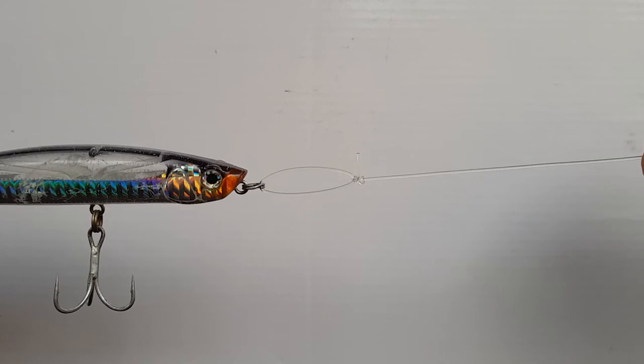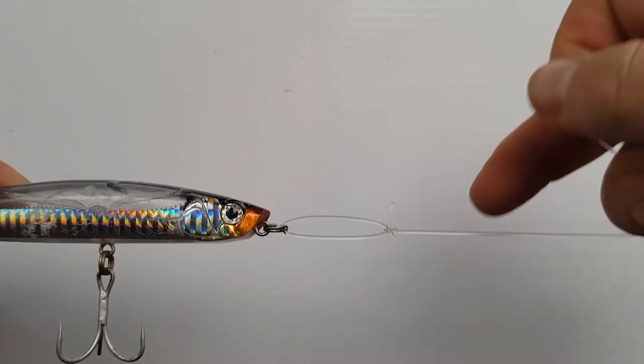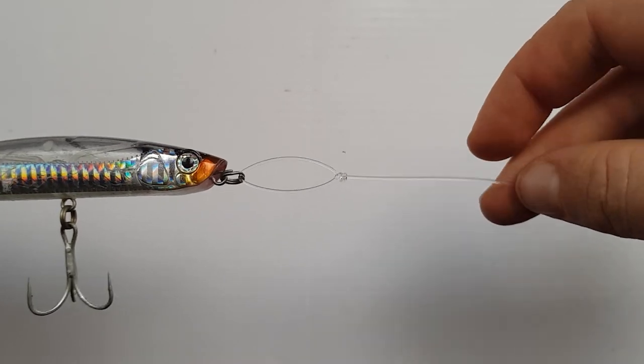I think you'll find it's a bit of a mix of maybe a perfection loop or a parlor loop knot. But yeah, that's what I tie for my loop knots for my lures. Thanks guys.